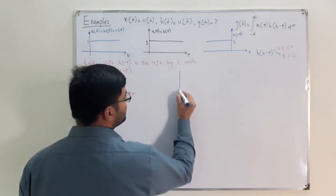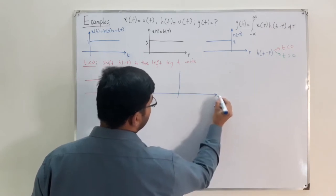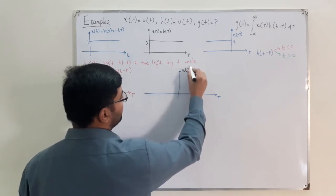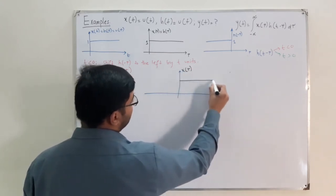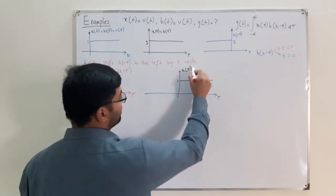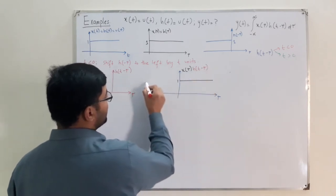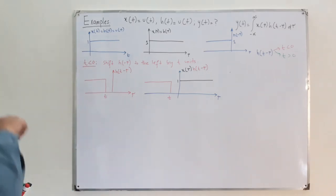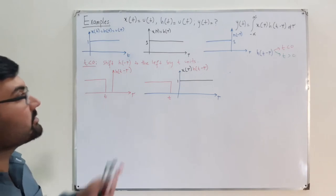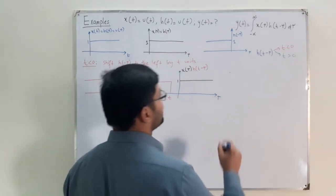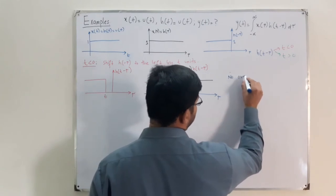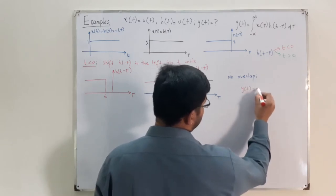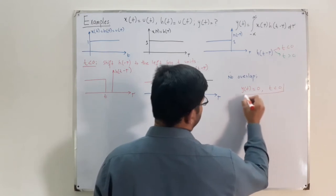Now we take the product of x(τ) and h(t − τ). Plotting both on the tau axis, we can see there is no overlap between x(τ) and h(t − τ). No overlap means no product, no integration, and no output. Therefore, y(t) = 0 for t less than zero.